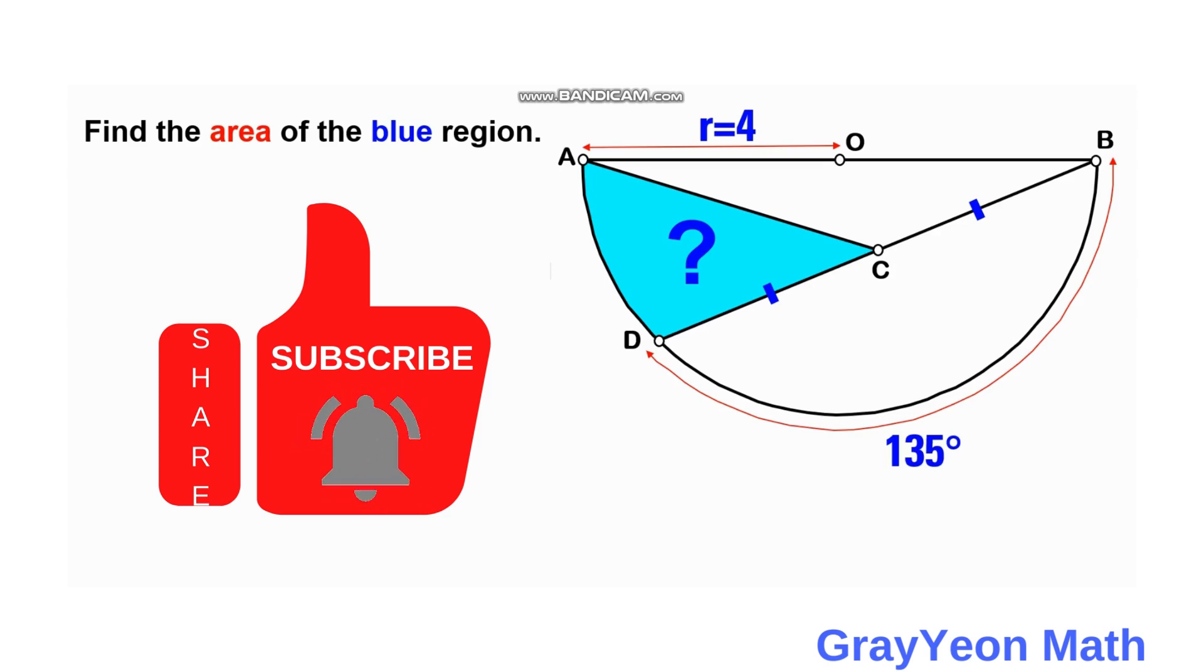Welcome to Grey Young Maths. We are asked to solve this problem. We have a semicircle O and a line is drawn from point D to point B such that the arc on this chord is 135 degrees. And another line is drawn from point C to A in which point C is the midpoint of DB.